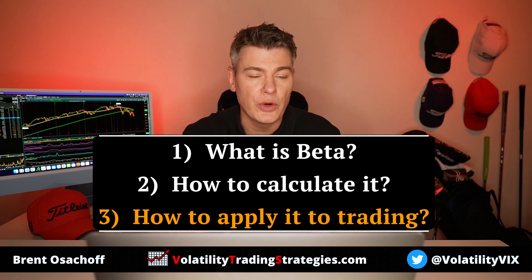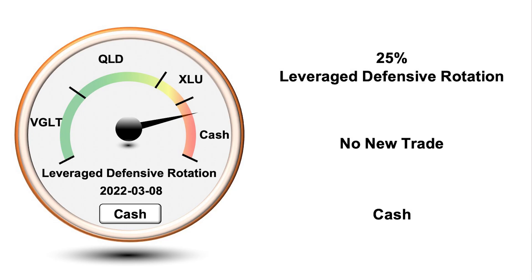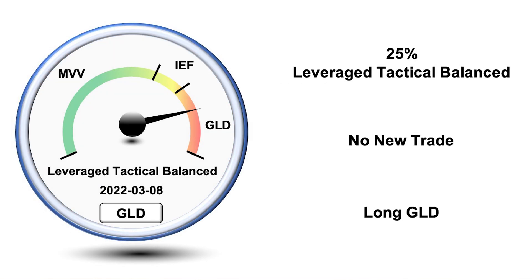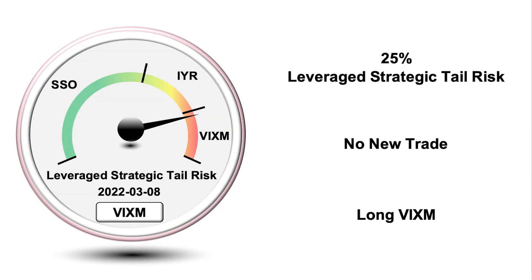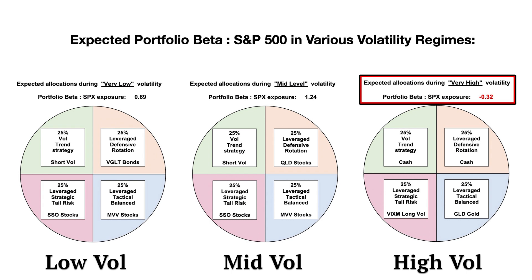There are several ways you can use beta factor in your own portfolio. I'll give you an example using three of my tactical strategies. The Defensive Rotation Strategy tactically rotates between the Nasdaq index, bonds, utilities, or cash based on market conditions. The Tactical Balance Strategy has potential for either stocks, bonds, or gold — we've been holding gold recently with the latest market crash. Strategic Tail Risk can rotate between stocks or real estate during stable markets, but also long volatility to take advantage of periods with elevated risk. Understanding how each position moves in relation to each other and the S&P 500 is very useful for combining them into an effective diversified portfolio.